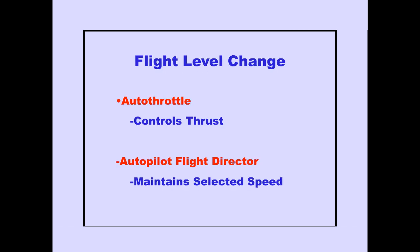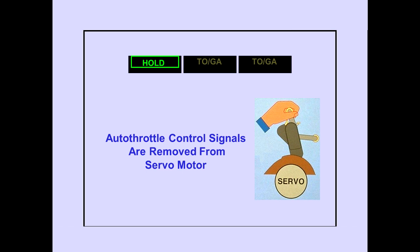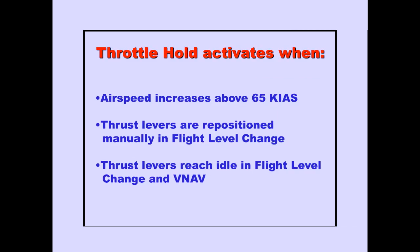In the flight level change mode, the autothrottle controls thrust for automatic climbs and descents, while the autopilot flight director pitch maintains the selected speed set in the IAS mock window. The thrust limits are activated from the FMS-CDU. The selected limit is shown on the IAS display. When throttle hold is active, hold is displayed on the PFDs, and autothrottle control signals are removed from the thrust lever servo motor. This prevents the autothrottle from moving the thrust levers. Throttle hold activates when airspeed increases above 65 knots during takeoff, when the thrust levers are manually repositioned in flight level change, and when the thrust levers reach idle in flight level change and VNAV.